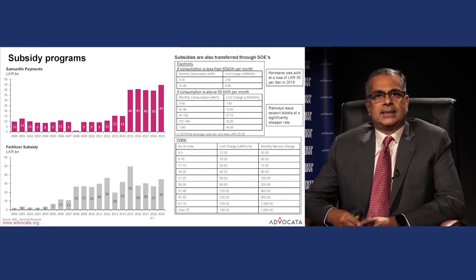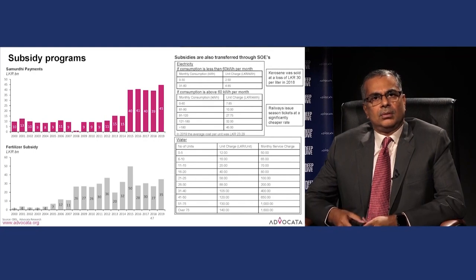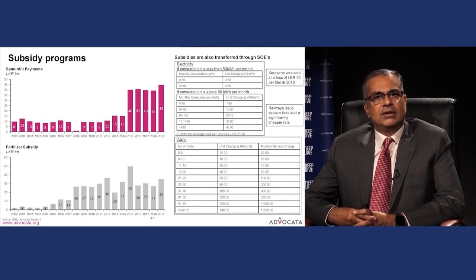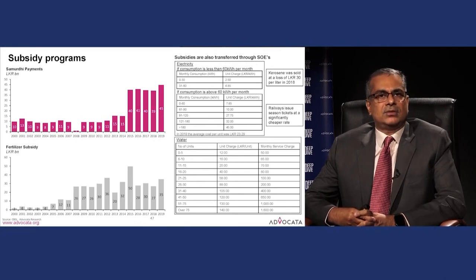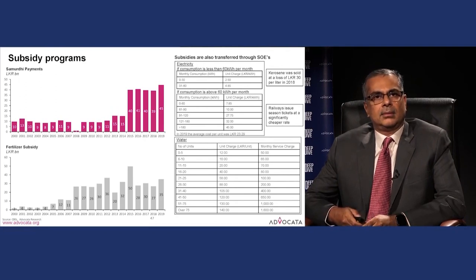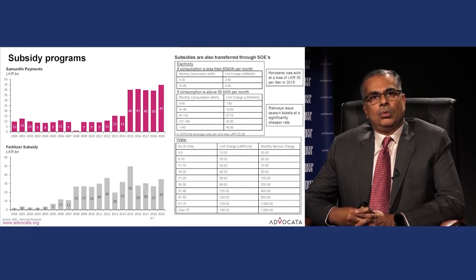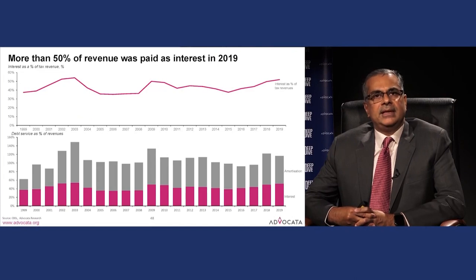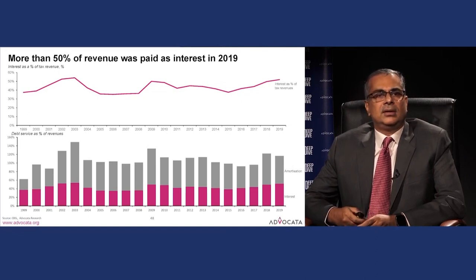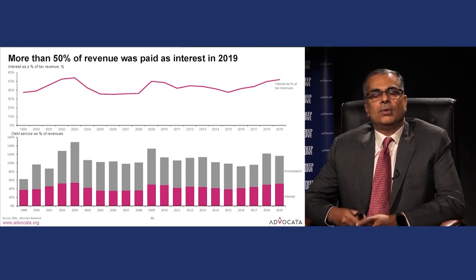In summary on subsidies: pricing utilities at market price and increasing the cash transfer component would leave the consumer with choice in how to spend. Almost 50 percent of revenue is used to pay for interest, and if you include debt servicing, it exceeds 100 percent of revenue.